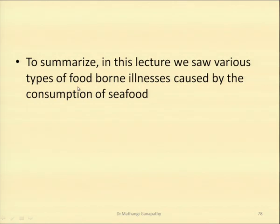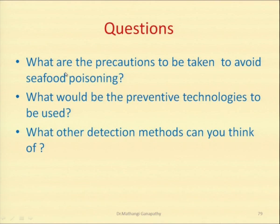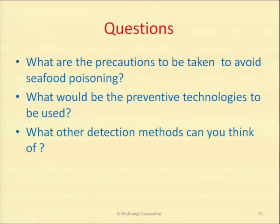To summarize this lecture: we saw various types of foodborne illnesses caused by consumption of seafood. Many of them were because of the accumulation of algal toxins which became concentrated as they moved up the food chain. The other cases were because of the indirect activity of bacteria converting a normal food component into a poisonous toxin. The questions based on this would be: what are the precautions to be taken to avoid seafood poisoning? What would be the preventive technologies to be used? What other detection methods can you think of, especially for shellfish poisoning, given that in many cases proper detection methods are not available — or can LC-MS or other rapid detection technologies be developed?